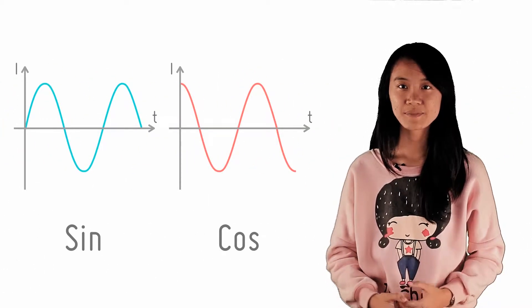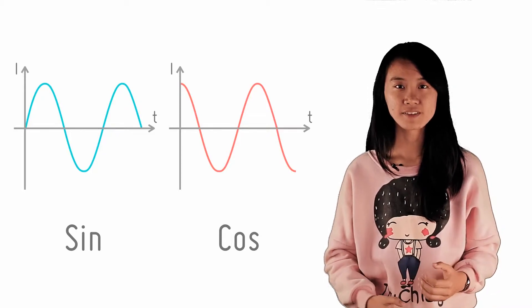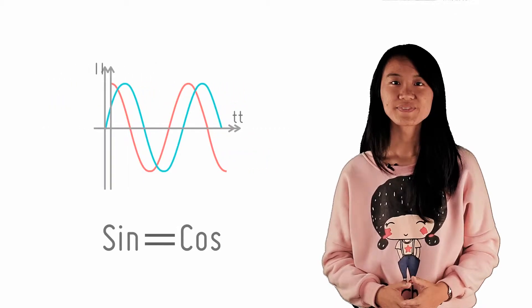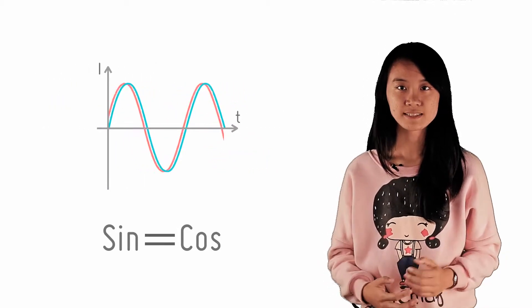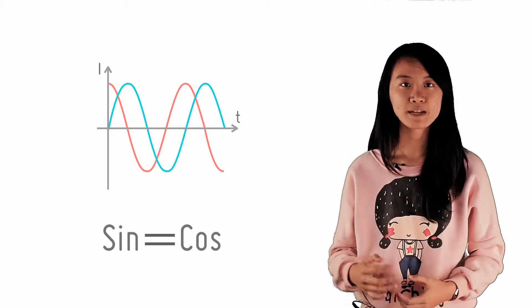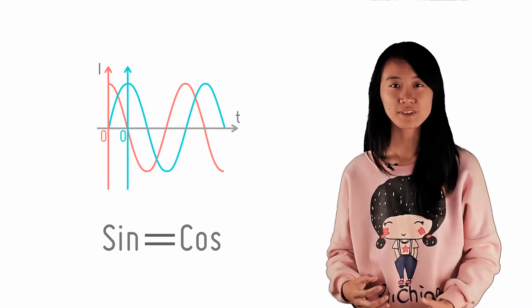Although a sinusoidal AC can be represented by either a sine or cosine graph, we should not think of them as two different things. In fact, they are the same thing. A cosine graph can be converted into a sine graph by simply adding a quarter of a period, or simply by choosing the origin for time such that both graphs are the same.